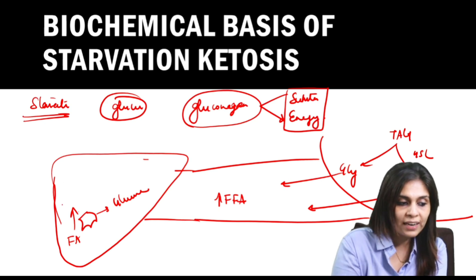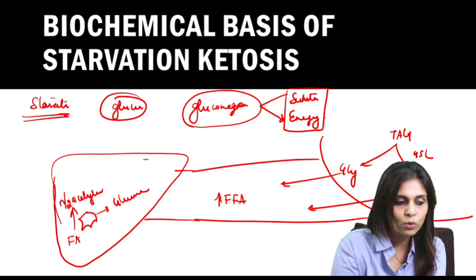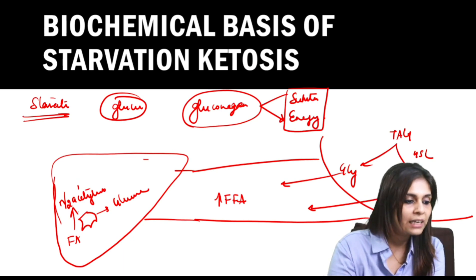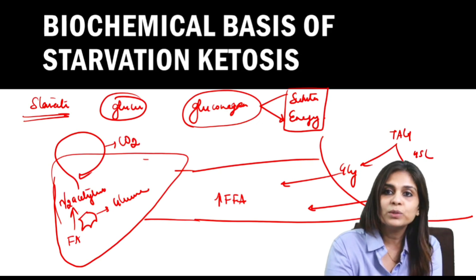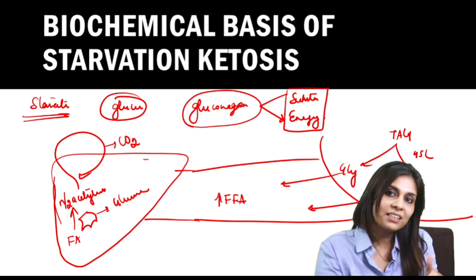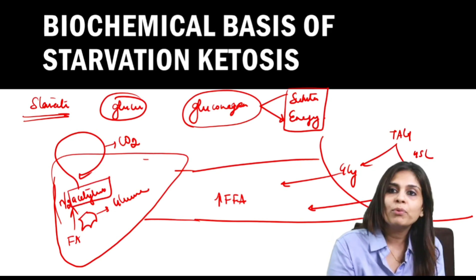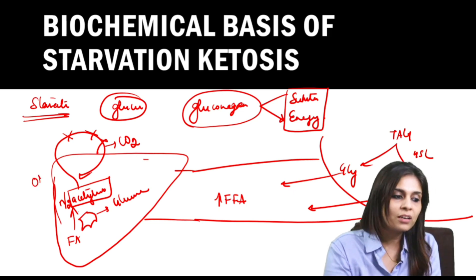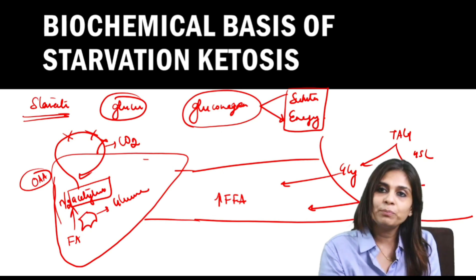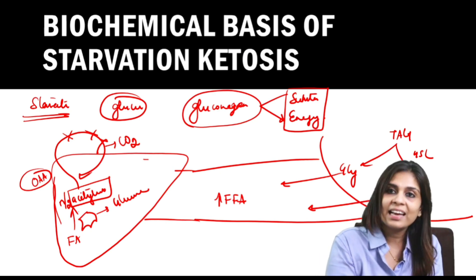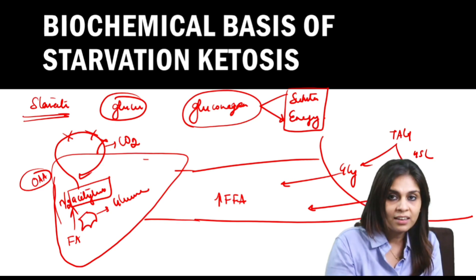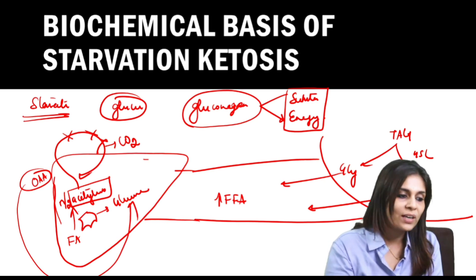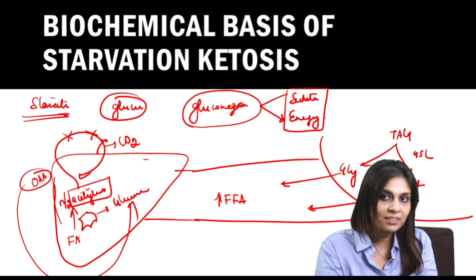All fatty acids get broken down by beta-oxidation to acetyl CoA. In a normal person who is not starving, this acetyl CoA enters the citric acid cycle and comes out as carbon dioxide which is exhaled. But in starvation, acetyl CoA cannot get into the citric acid cycle because there is no oxaloacetate. The first step of the citric acid cycle is acetyl CoA reacting with oxaloacetate. In starvation, oxaloacetate is not available because it is used for gluconeogenesis. So acetyl CoA accumulates.